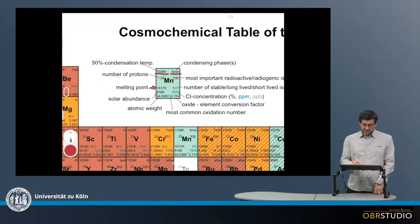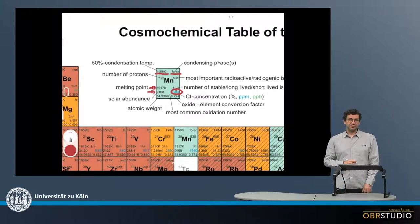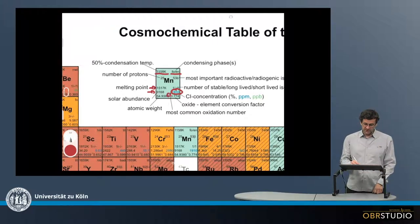Then there is something like the melting point or the solar abundance, which is often quite helpful, but also the CI concentration, which is used quite often. And there is the most common oxidation number, the atomic weight.